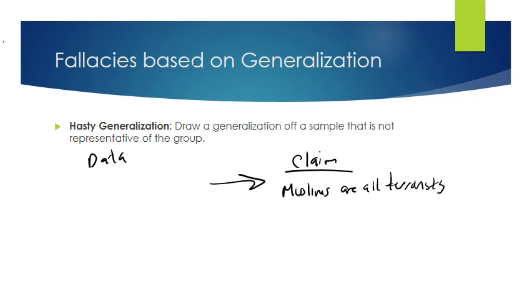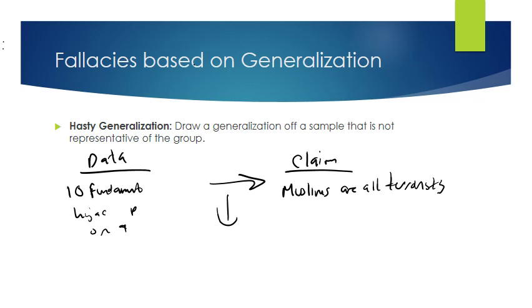An example: the claim 'Muslims are all terrorists'; the data is '10 fundamentalists hijacked a plane on 9/11'; and the warrant is that those 10 fundamentalists represent all Muslims. We can see the problem — it's a very small sample being used to generalize about a huge population. If there are around two billion Muslims in the world, not all of them are committing such acts, so it's probably a very small percentage, not representative of the entire population.